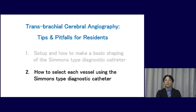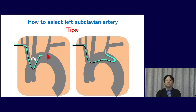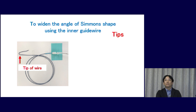The second topic is how to select each vessel using the Simon's catheter. First, here is how to select the left subclavian artery. After making a basic shape, pull the catheter and select the left subclavian artery. When the tip of the catheter cannot reach the origin of the left subclavian artery, you can use the guide wire to open the tip angle, or you can select the left subclavian artery directly from the descending aorta.